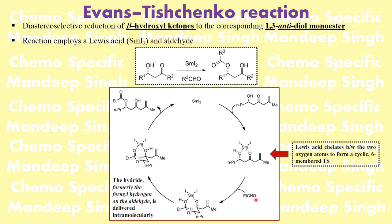When you add an aldehyde — used in excess because it gets converted into the ester — the hydroxyl attacks the carbonyl of the aldehyde, forming an intermediate. The hydride comes from the formyl hydrogen of the aldehyde, very similar to the Cannizzaro reaction. This hydride is then delivered intramolecularly, attacking the ketone carbonyl, which gets reduced to an alcohol while the aldehyde carbon becomes a carbonyl.